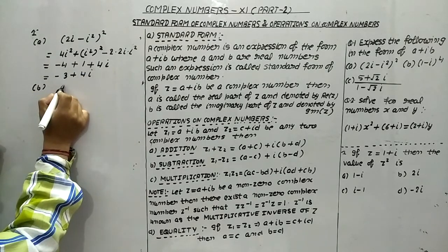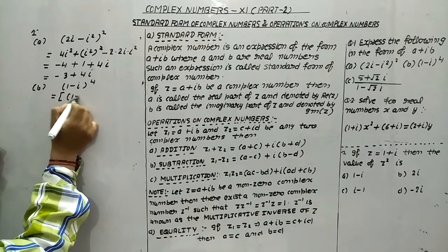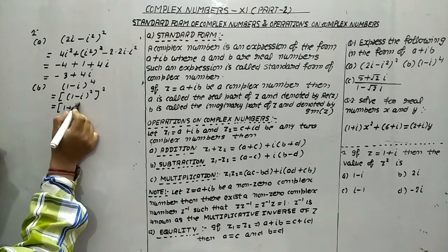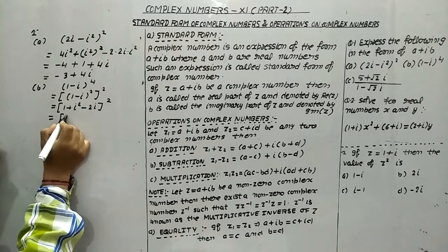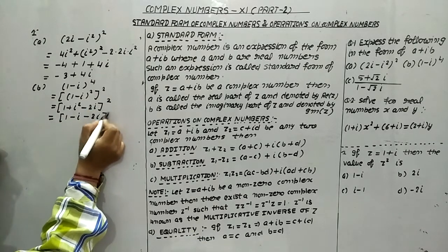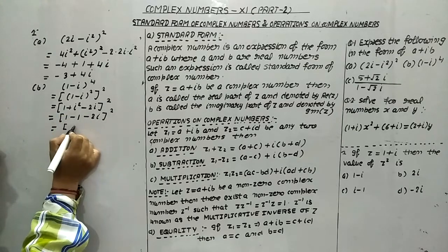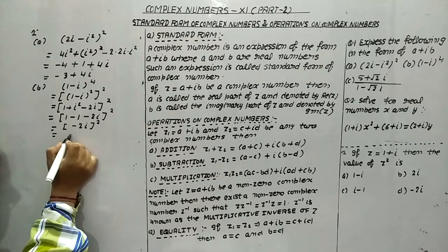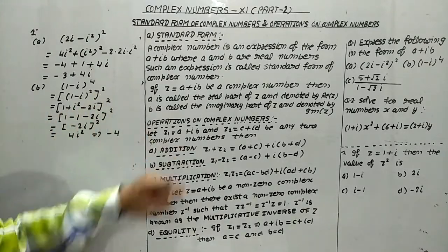Part b: we have (1 minus i) raised to the power 4. Write it as [(1 minus i)²]². Expanding (1 minus i)² gives 1 plus i² minus 2i, which is 1 minus 1 minus 2i, so the 1 and minus 1 cancel, leaving minus 2i. Then (minus 2i)² equals 4i², and since i² equals minus 1, this gives minus 4.